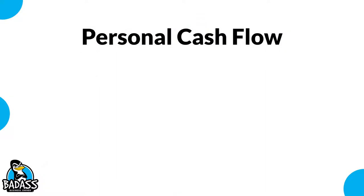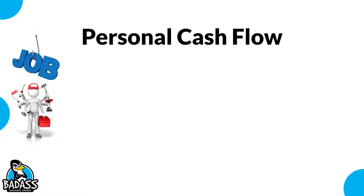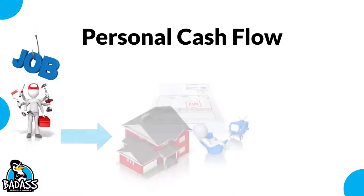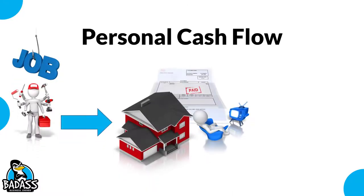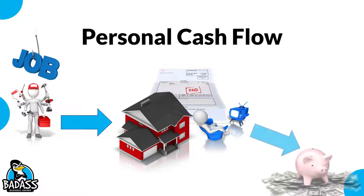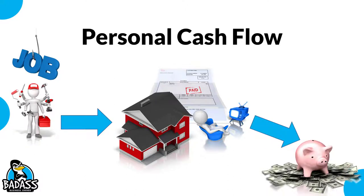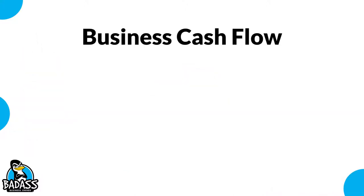Let's make it simple and go to your personal cash flow — this will help some of you understand. You have a job or a business and you take in money. Then you turn around and pay your mortgage, your bills, your rent, your leisure activities, anything you wanna do. And if you're lucky and there's money left over, it flows right into savings or retirement. That's the flow of money for you personally.